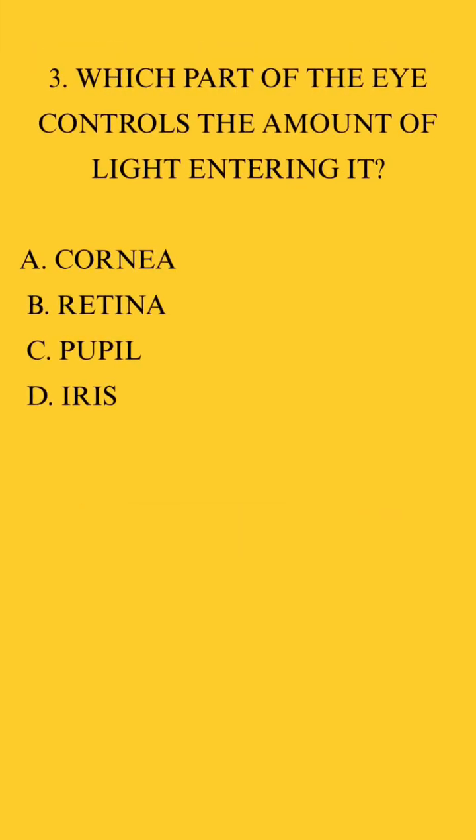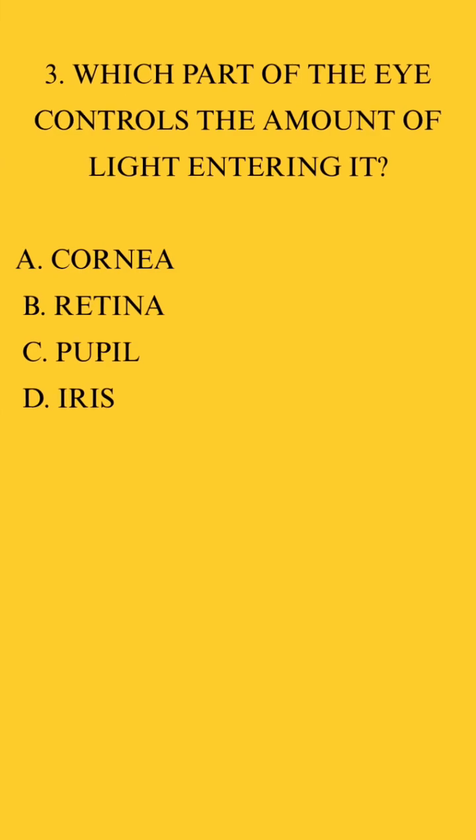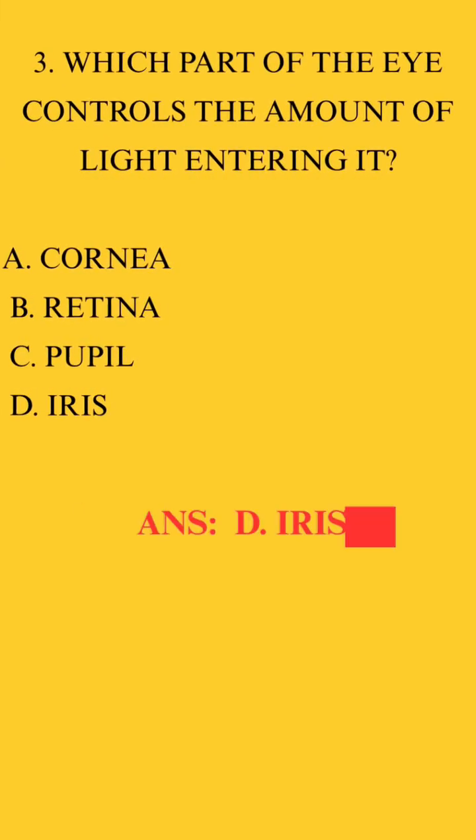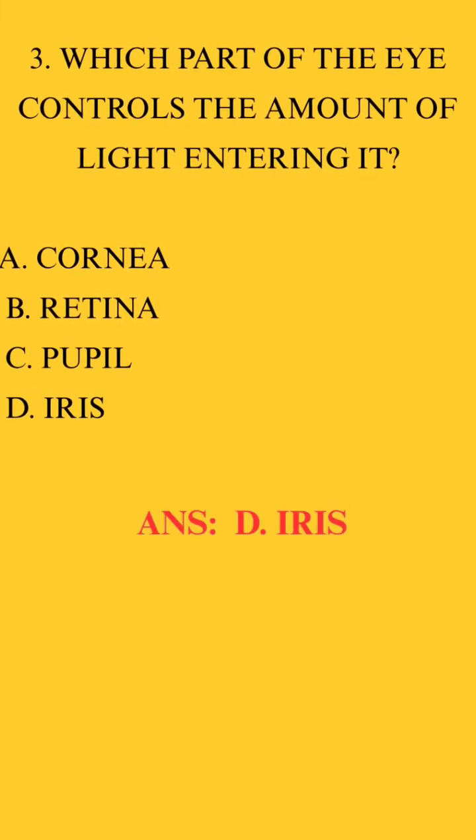3. Which part of the eye controls the amount of light entering it? d. Iris.